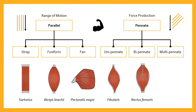Finally, multipennate architecture is where the muscle has fibers oriented at more than two different angles along the line of overall pull — the force generating axis. Perhaps the best example of multipennate architecture is the deltoid in the shoulder, which has anterior, medial, and posterior elements.